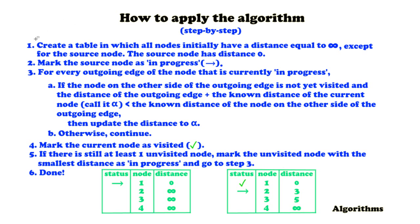The first step is to create a table in which all nodes initially have a distance equal to infinity, except for the source node. The source node has a distance of zero — this is trivial because it's the distance to itself, so it's just an initial value. We choose infinity because whenever we find a path in the graph, this distance will always be smaller than infinity, so we have an initial value that we can update later on. The second step is to mark the source node as in progress, indicated by an arrow pointing to the right. In this example table, we have four nodes. The first node is the source node with a distance of zero, and the other distances are initially infinity, while the source node is in progress.